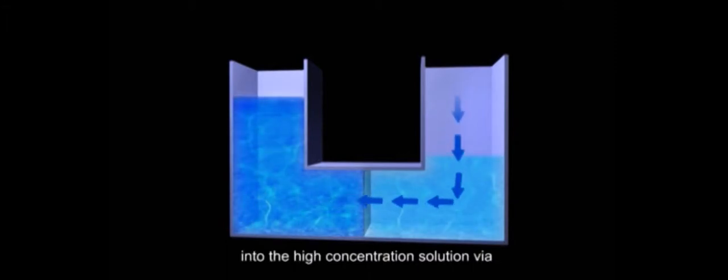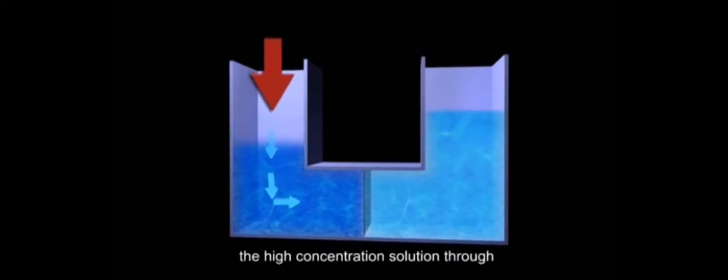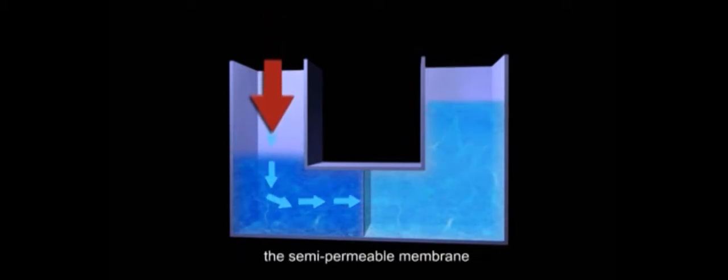Osmosis means water flows from the low concentration solution into the high concentration solution via a semi-permeable membrane. Reverse osmosis occurs when the high concentration solution is pressurized so that water flows from the high concentration solution through the semi-permeable membrane into the low concentration solution.